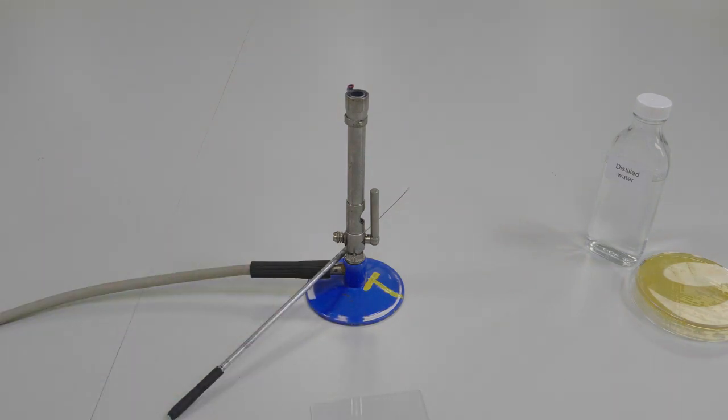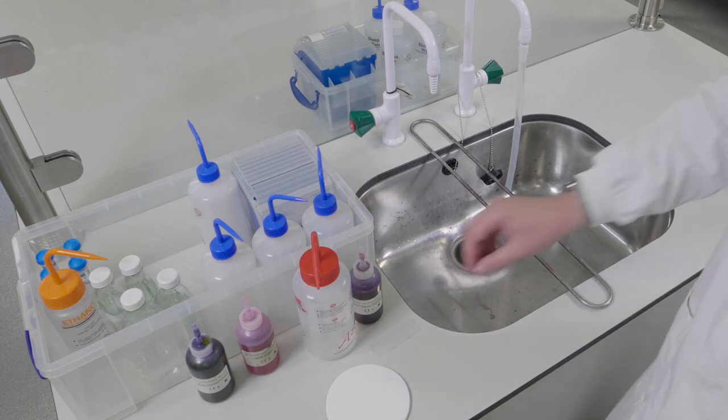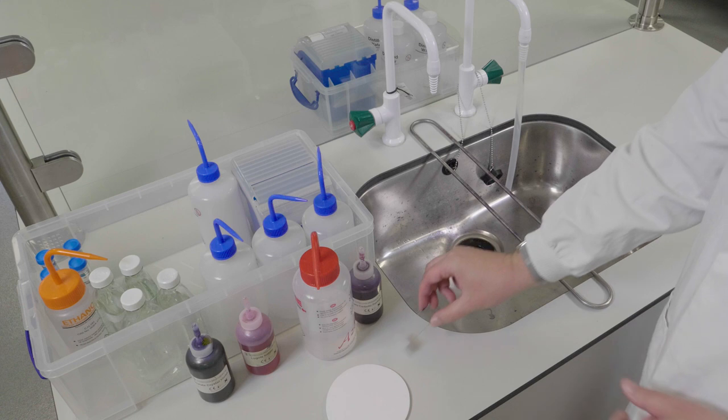As you've just seen on the video, you take your slide and run it through the Bunsen flame three to four times. You're now ready to start gram staining.